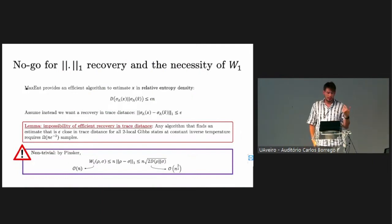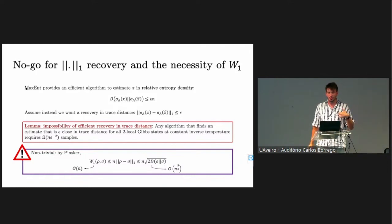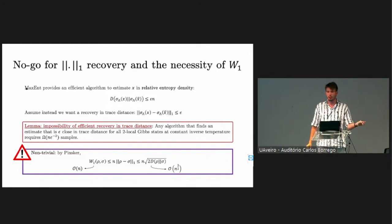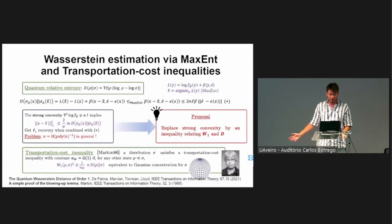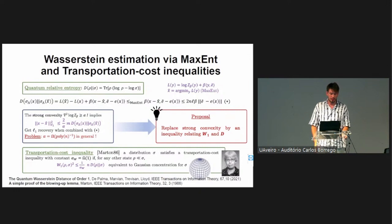We proposed learning states in this metric because, even for product states, getting an estimate up to epsilon in trace distance requires a number of samples polynomial in system size. So if we work with the usual trace distance metric, we won't be able to do anything interesting in the poly-log n regime. However, if we are happy with the Wasserstein distance instead, we can show that it is possible to recover these Gibbs states up to Wasserstein distance epsilon·n with log n samples.